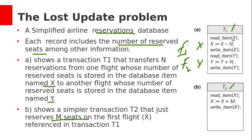We can write all the operations like this. First, we need to read data item X which stores the number of reservations in flight F1. We need to transfer N reservations from flight F1 to flight F2, so subtract N from data item X. Then write that updated value onto the disk. Then read data item Y, add N to it, and write that updated value onto the disk.